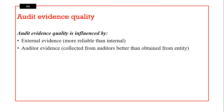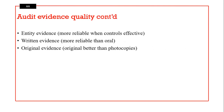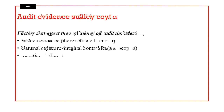Evidence obtained directly by auditors is better than that collected from entity managers. Entity evidence can be relied upon only if internal controls are effective. Written evidence is said to be more reliable than oral evidence. Original evidence is better than photocopies. Corroborative evidence is better than evidence from one source.